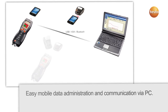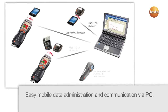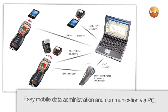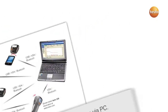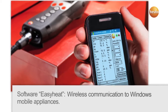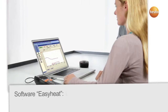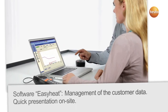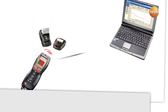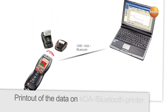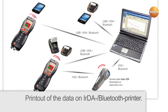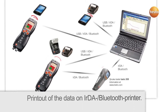The Testo 330LL communicates with PC and Testo 308 smoke testers. Software packages give you the possibility of adapting the Testo 330LL to your communication needs and enable the presentation of results for the customer. The printout of data from a PC or a pocket PC takes place directly via the IRDA or Bluetooth printer.